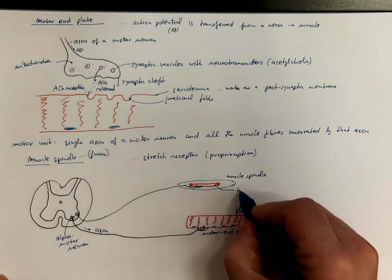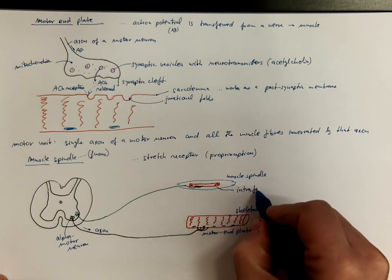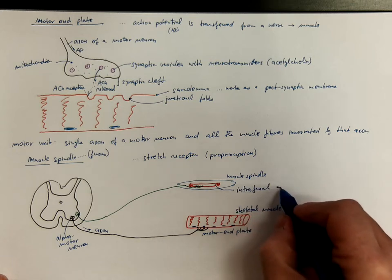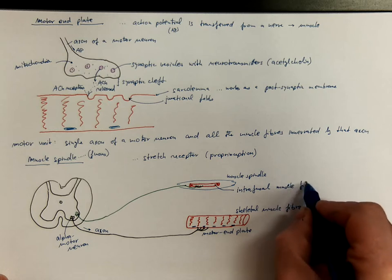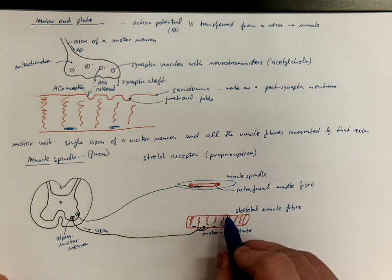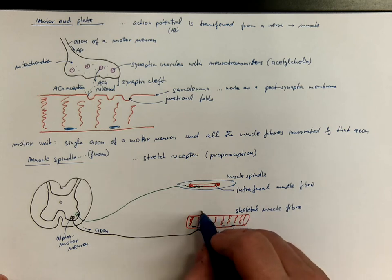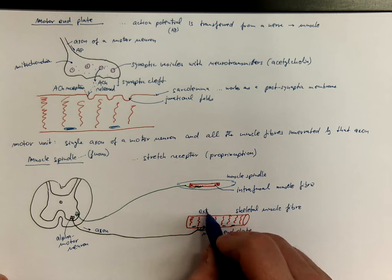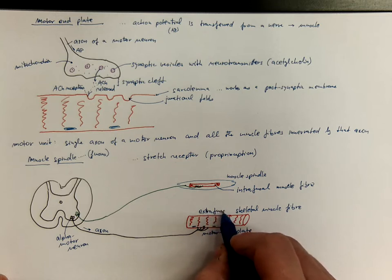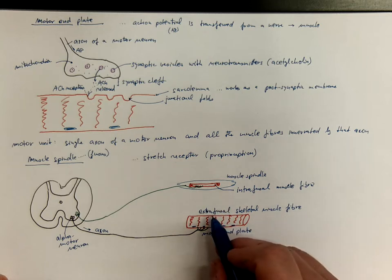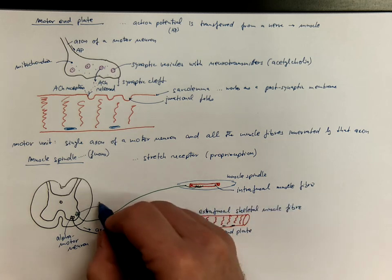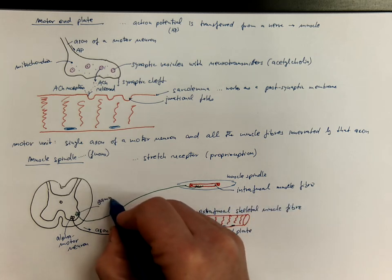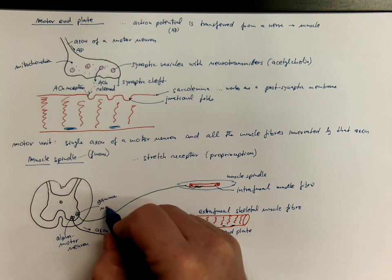this skeletal muscle fiber which is inside the spindle, the term for which being the fusus, is called intrafusal muscle fiber, while the regular working and force generating muscle fiber is called therefore extrafusal muscle fiber, because it's not inside, it's outside the muscle spindle. This neuron that innervates the intrafusal muscle fiber is called gamma motor neuron.